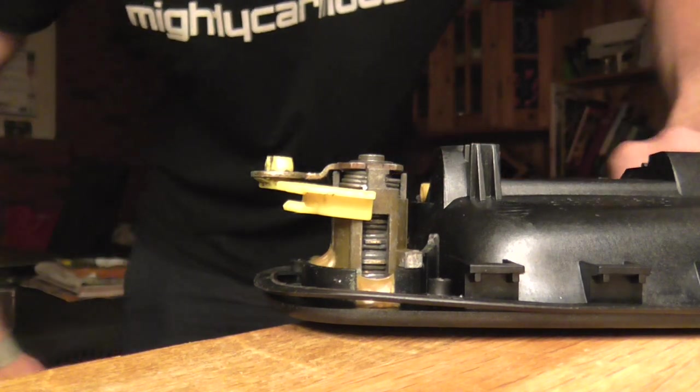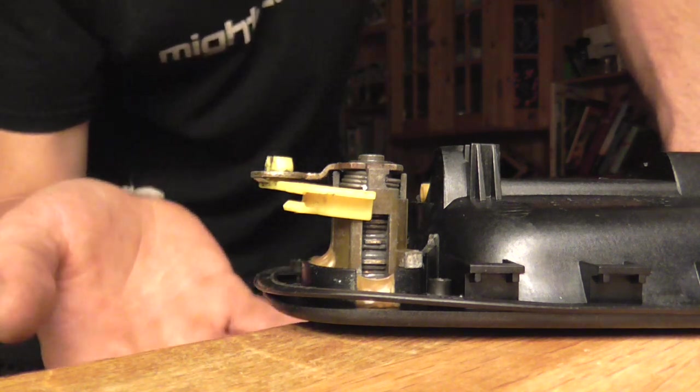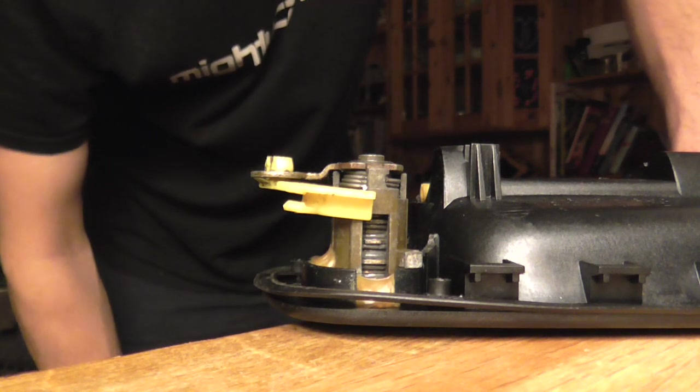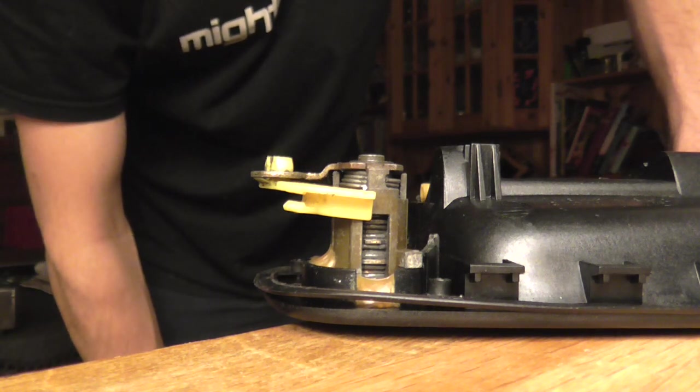So guys, today's video I'm just going to show you exactly how a car door lock works. This is out of a Toyota Carina, which uses the same lock mechanism as pretty much all older Toyotas.